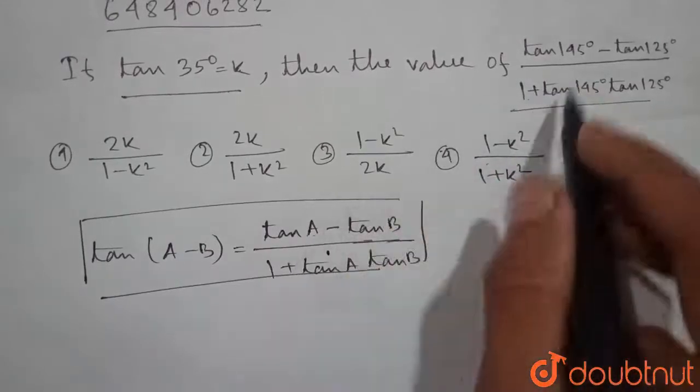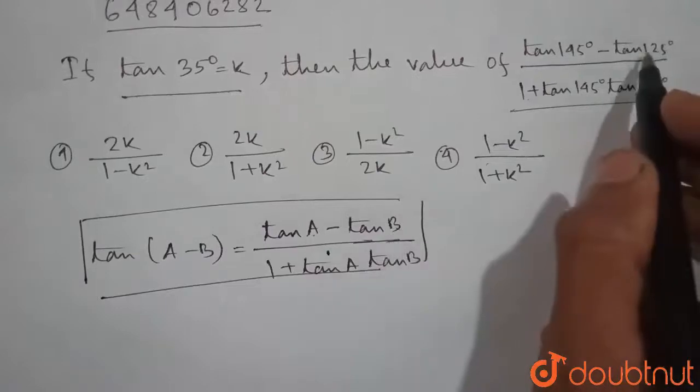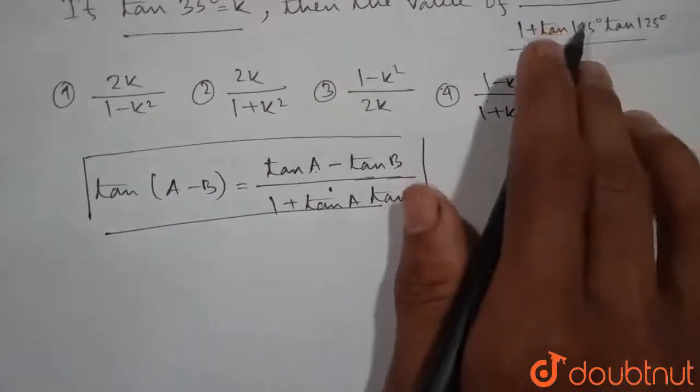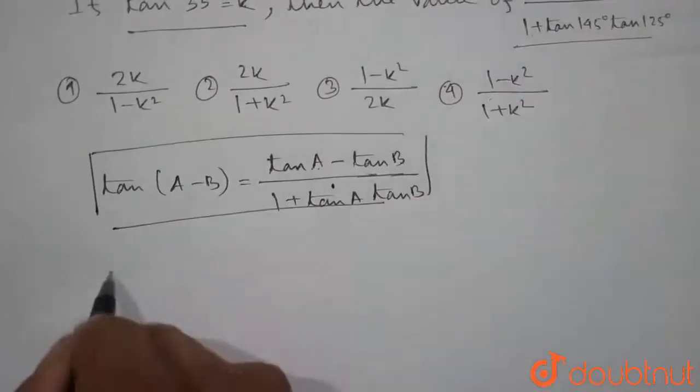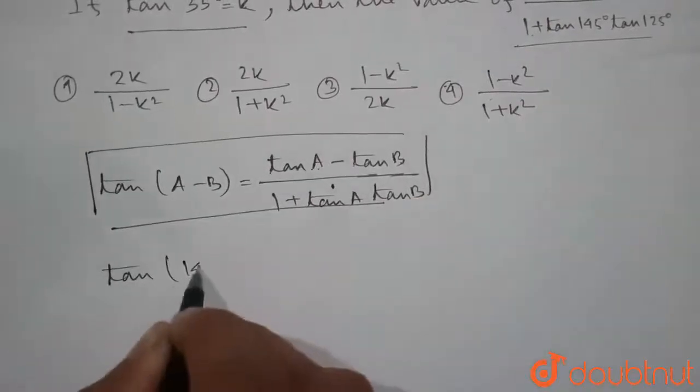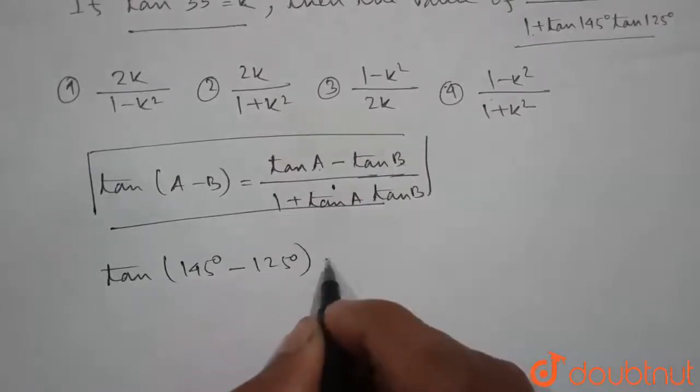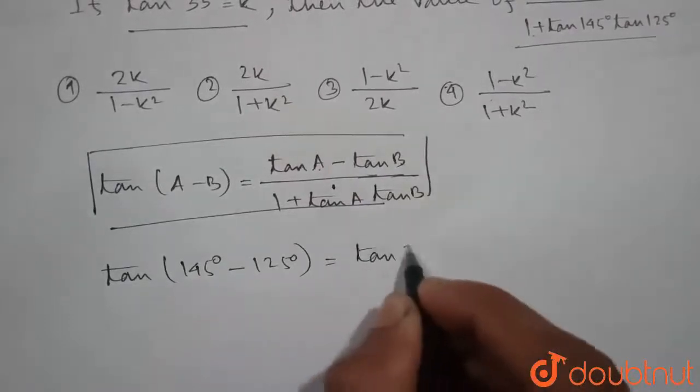Here the value of A is 145 degrees and the value of B is 125 degrees. So we can write the given expression as tan of 145 degrees minus 125 degrees, which is equal to tan of 20 degrees.